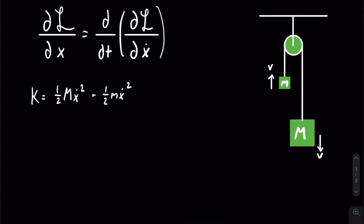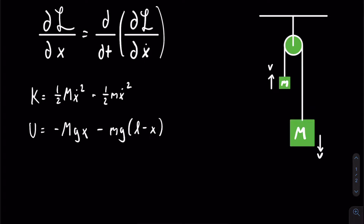The potential energy is a little bit more difficult. Both masses will have gravitational potential energy, and we can connect the potential energies of both masses because we know that however much the mass on the right goes down, the mass on the left will go up by that exact same amount. We consider the middle of the pulley to be the zero point of our gravitational potential energy. So the potential energy is equal to negative capital M g x minus lowercase m g times l minus x, where l is the length of the string — a constant. Any derivatives of constants are zero.